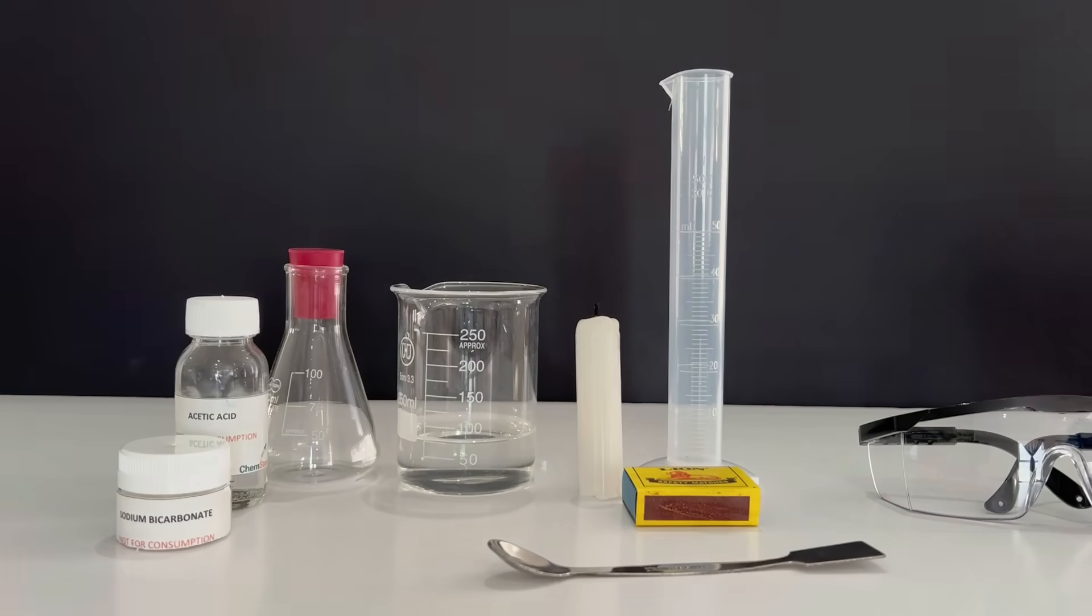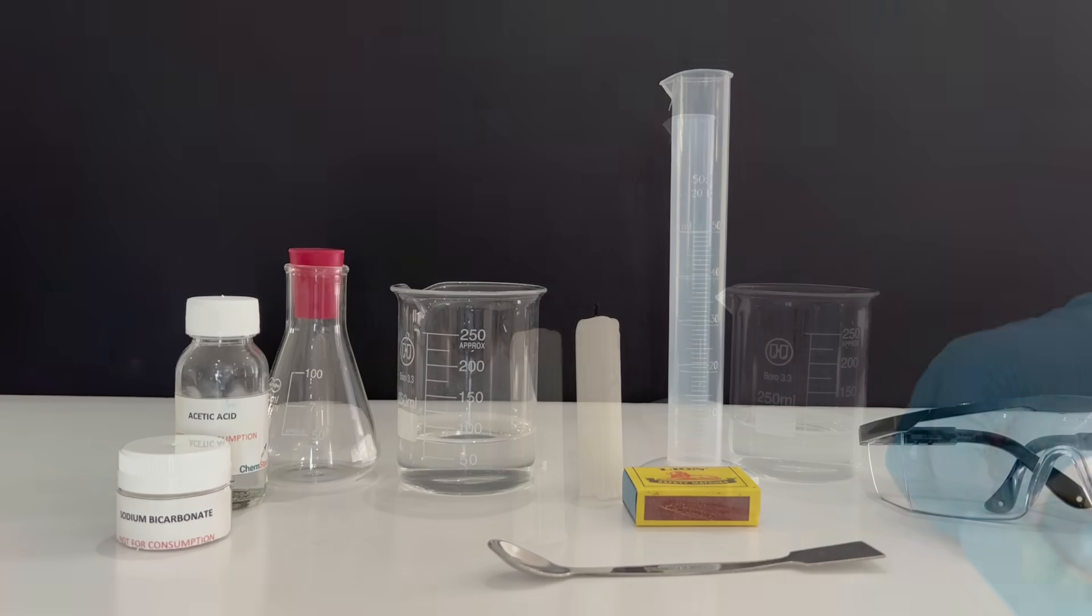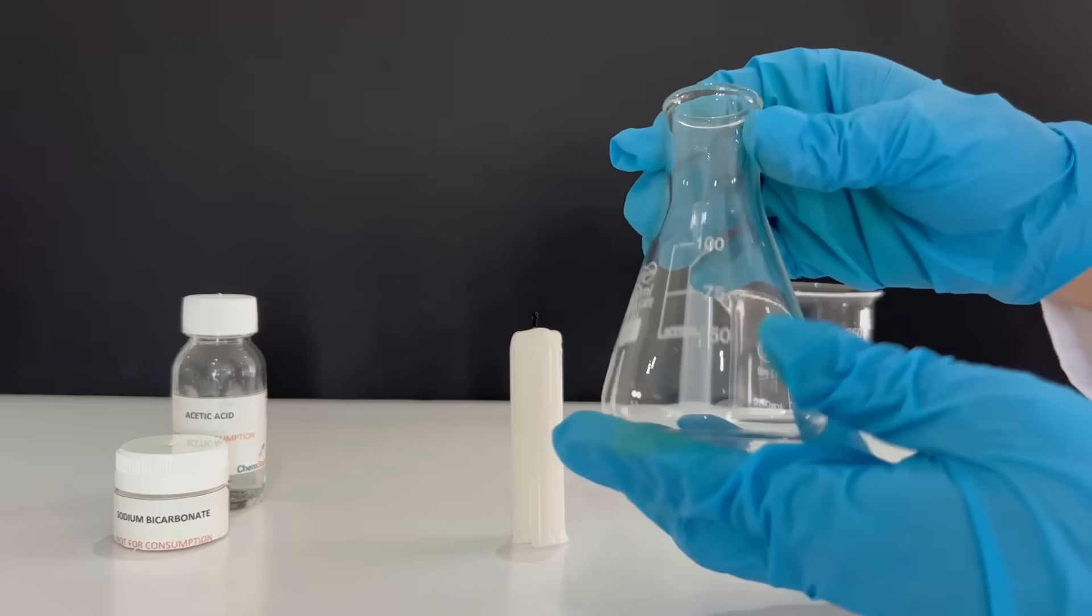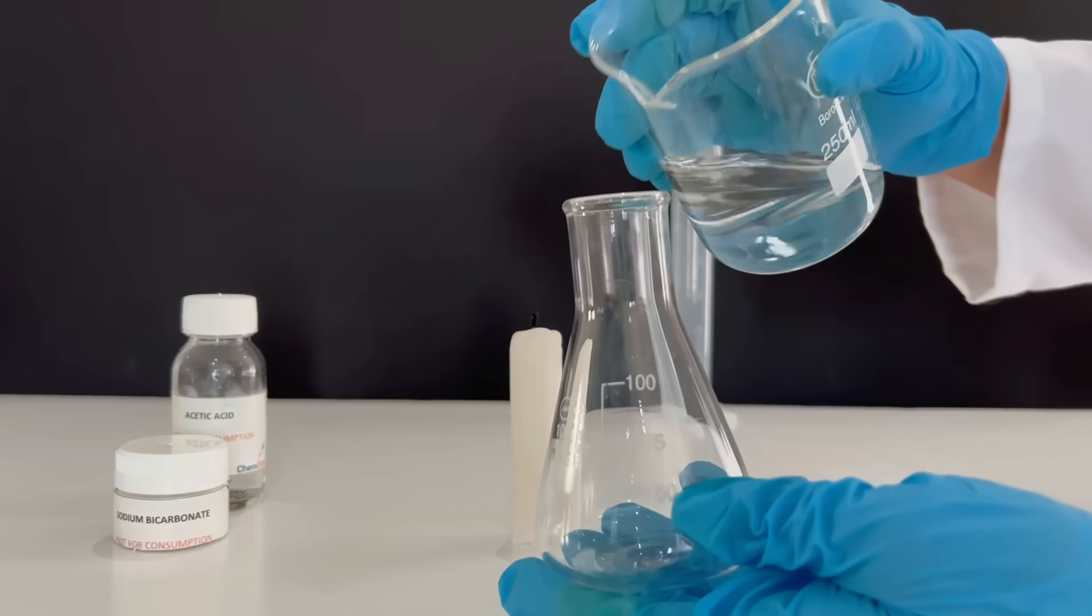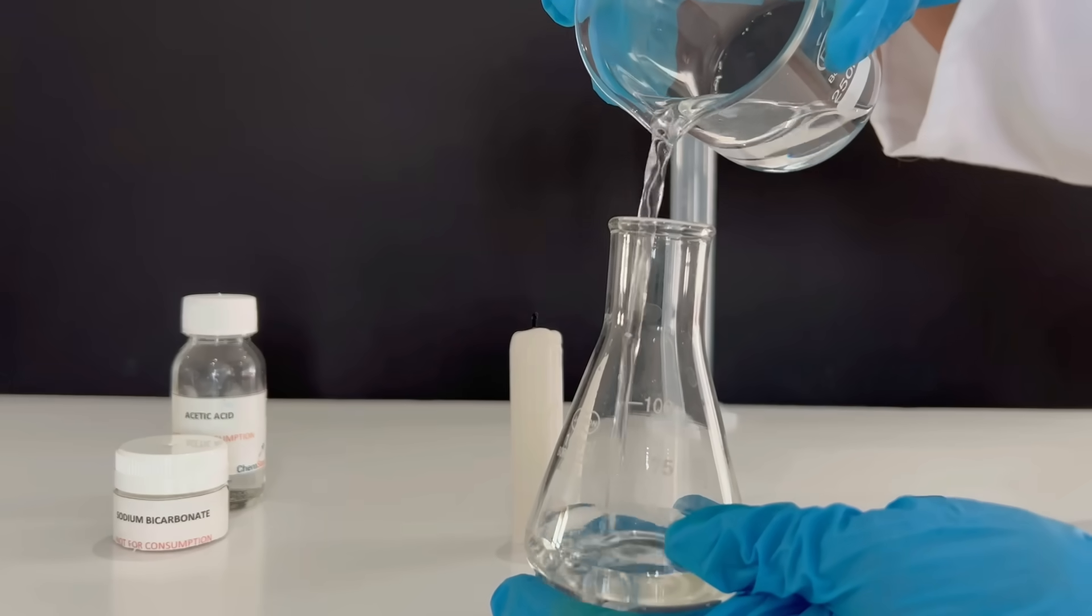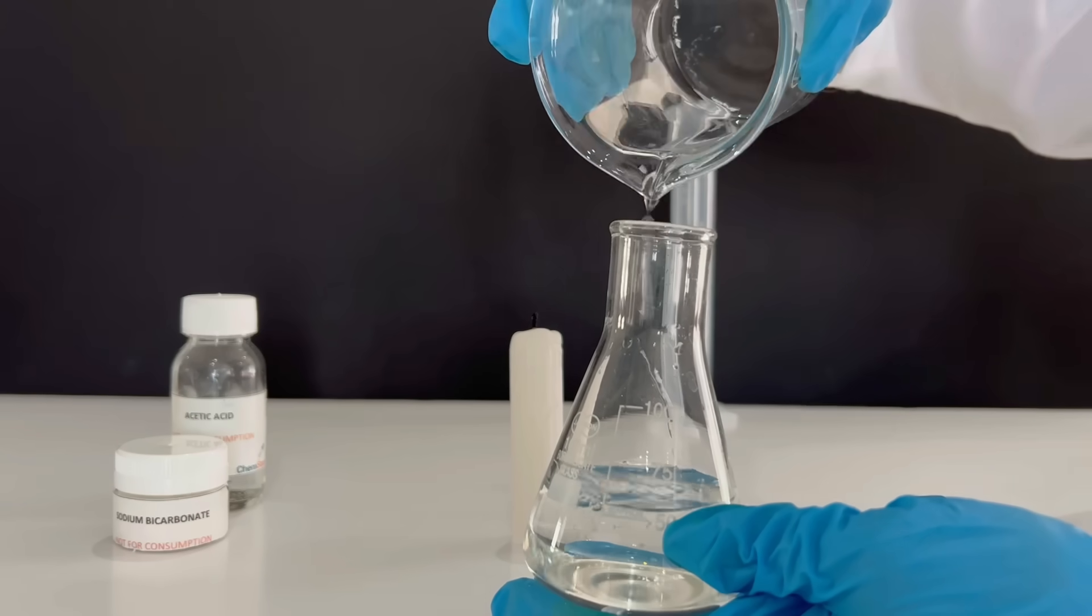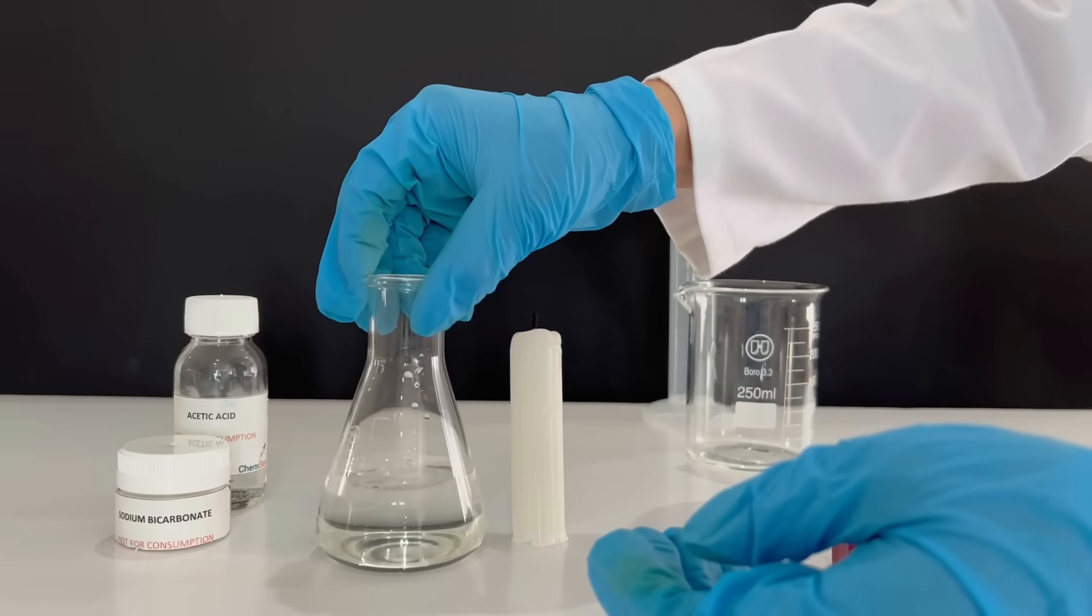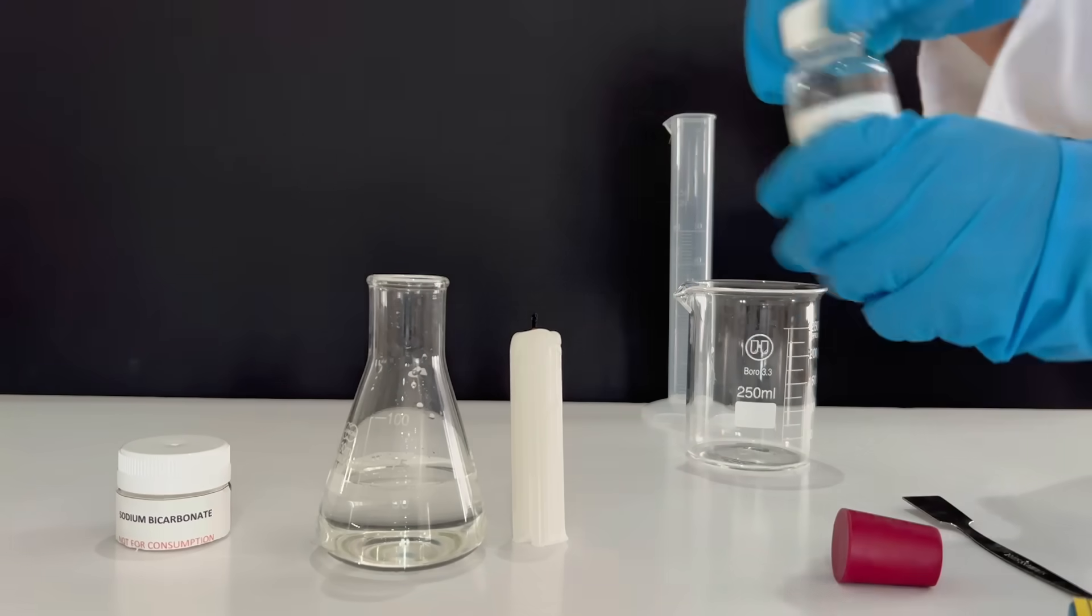So here we have all the materials. Let's set up the experiment. First, get your Erlenmeyer flask ready and add the 75 milliliters of water into the Erlenmeyer flask. Try not to spill.